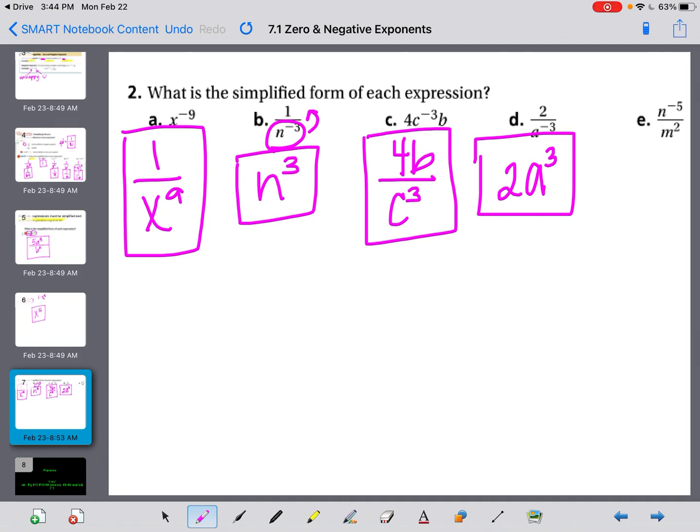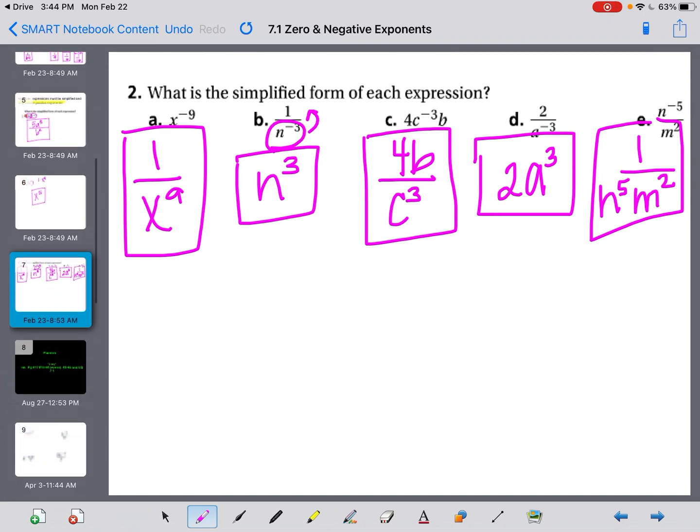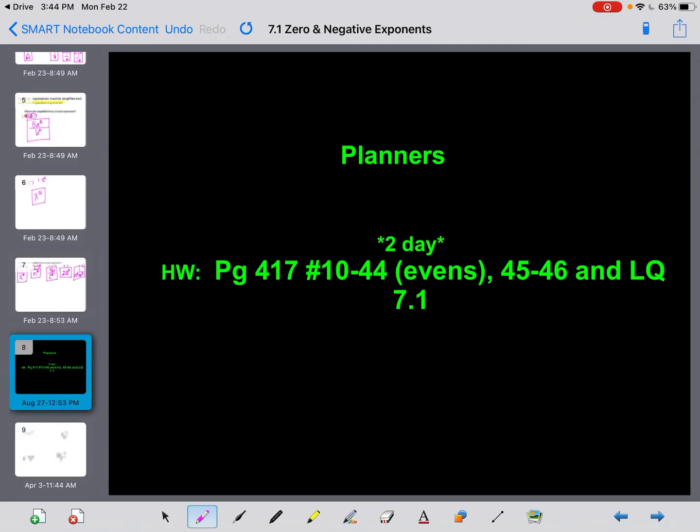And last but not least, the m to the 2nd stays on the bottom, and that n to the 5th has to move to the bottom. Since I can't have a fraction with things on the bottom and nothing on the top, we just put a 1 up top, and that's our final answer. That's the end of part 1. Check back for part 2.